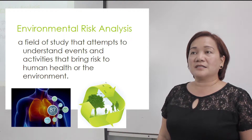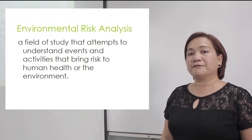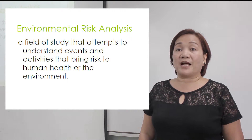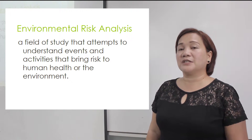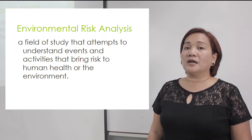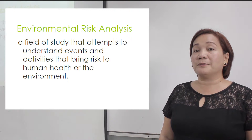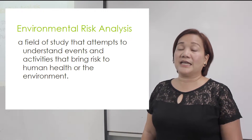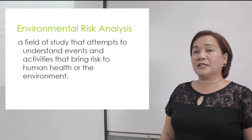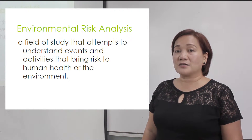ERA has two kinds. The first kind is the ERA that is done right after EIA. If it happens that after the EIA it has been identified that the risk of the impacts are significant to humans as well as the environment, another study would be done in continuity of the EIA — that process is the ERA. However, the environmental risk assessment I'm going to teach you today would be more applicable in the industry, in the actual industrial process.